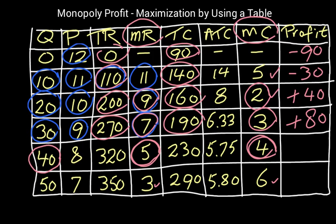Next is at quantity 40, we have a total revenue of 320, total cost of 230. That's plus 90.